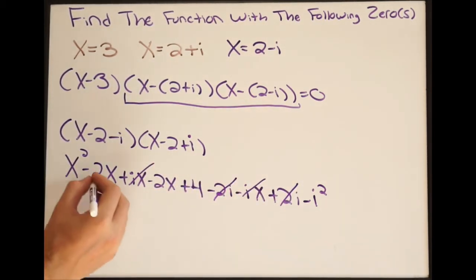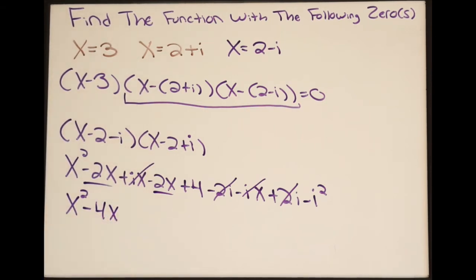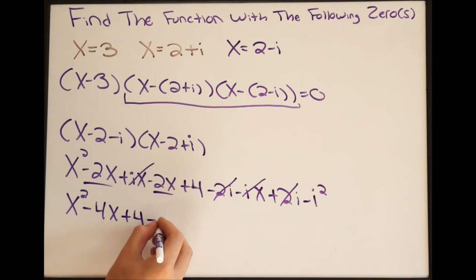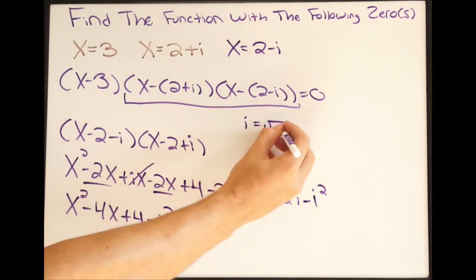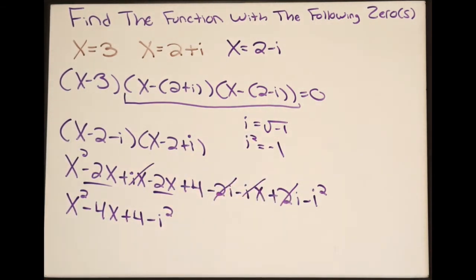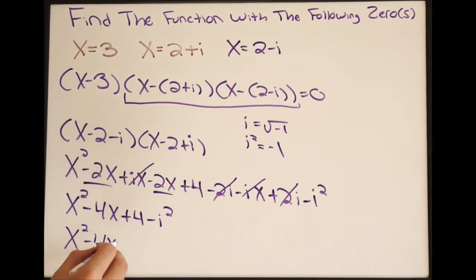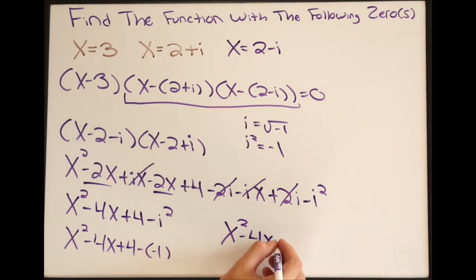Combining like terms, we get x squared minus 4x plus 4 minus i squared. Remember that i equals the square root of negative 1, so squaring both sides gives i squared equals negative 1. Replacing i squared with negative 1, we have x squared minus 4x plus 4 minus (negative 1), and two negatives make a positive, giving us x squared minus 4x plus 5.